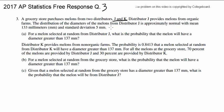The distribution of the diameters of the melons from distributor J is approximately normal, which is important, with mean of 133 mm and standard deviation of 5.